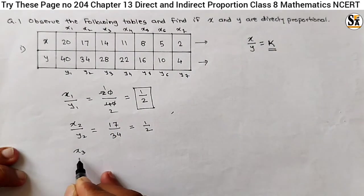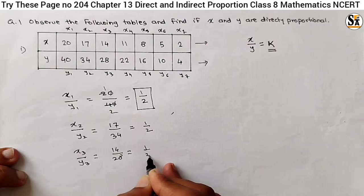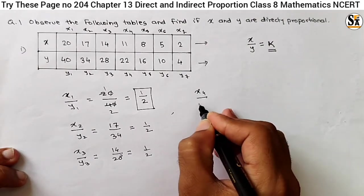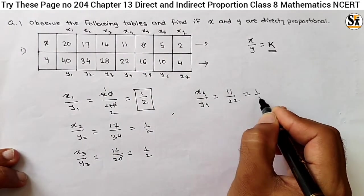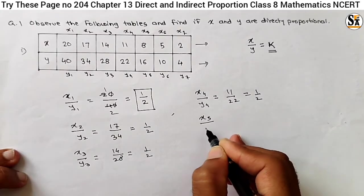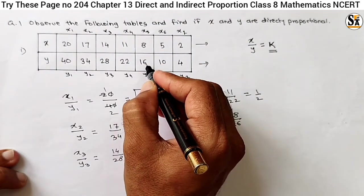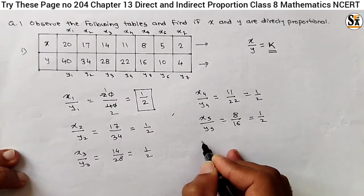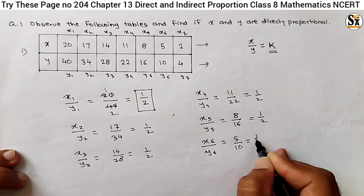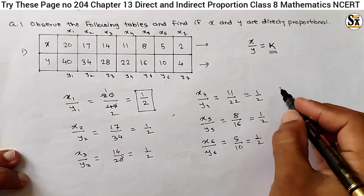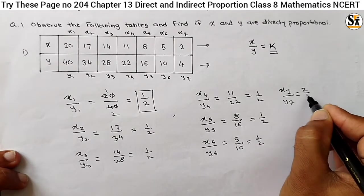Let's try x3 upon y3. That is x3 is 14, so 14 upon 28 — it is again 1 by 2. Similarly, take the ratio of x4 and y4. x4 is 11 upon 22, that is 1 upon 2. Similarly, x5 upon y5, that is 8 by 16 — x5 is 8, y5 is 16 — it is again 1 by 2. And similarly, x6 upon y6, it is also 5 by 10, which means 1 by 2. And similarly, x7 upon y7, that is equal to 2 upon 4, means 1 by 2.